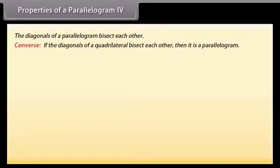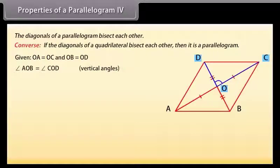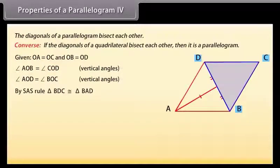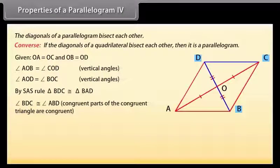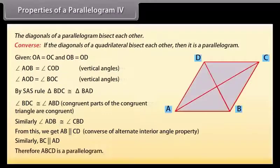The converse says: if the diagonals of a quadrilateral bisect each other, then it is a parallelogram. Given OA = OC and OB = OD, and angle AOB = angle COD (vertical angles), by SAS rule triangle BOC is congruent to triangle BOA. Therefore angle BDC = angle ABD and angle ADB = angle CBD by CPCT, giving AB parallel to CD and BC parallel to AD using the converse of alternate interior angle property. Therefore ABCD is a parallelogram.